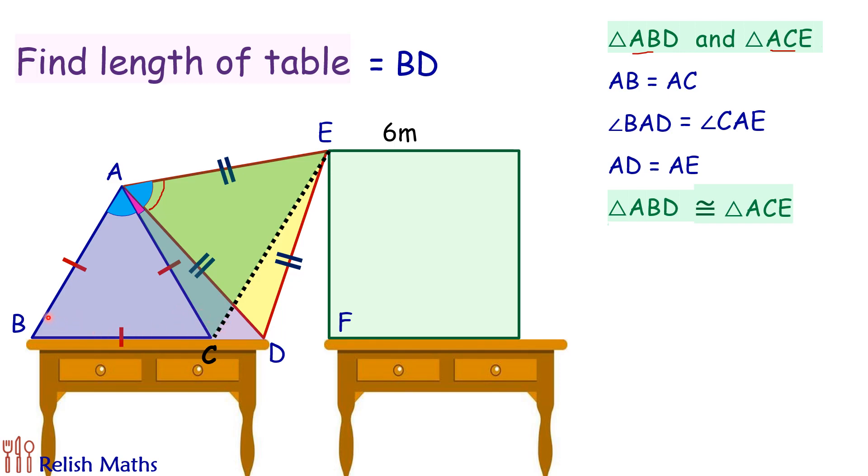So corresponding angle means this angle B, this is 60 degrees. Now here this angle B will be equal to angle C in triangle ACE. So this particular angle will also be 60 degrees. Also from the first triangle the side BD will be equal to CE.